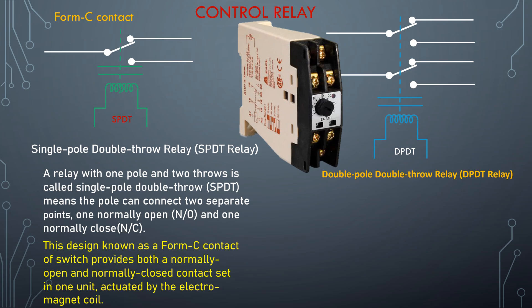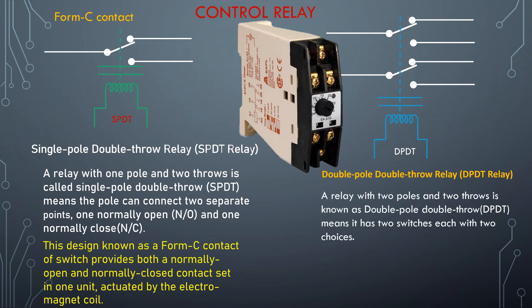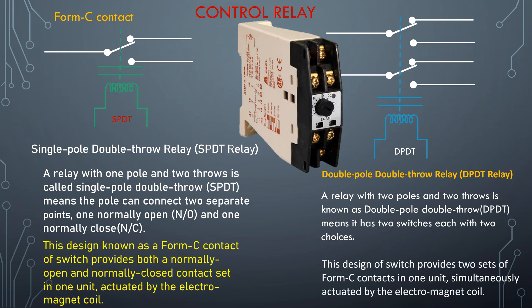Double pole double throw relay — DPDT relay. A relay with two poles and two throws is known as double pole double throw, DPDT. It means it has two switches, each with two choices. This design provides two sets of Form C contacts in one unit, simultaneously actuated by the single electromagnet coil.